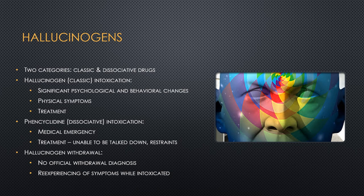Hallucinogens cause a very profound disturbance in reality. There are two categories: classic and dissociative drugs. Classic hallucinogens such as LSD — also called acid or boomers — can cause significant psychological and behavioral changes including paranoia, illusions, and hallucinations. Physical symptoms include pupillary dilation, tachycardia, sweating, and tremors. Treatment is usually trying to talk the patient down and reassure them the symptoms will subside. In severe cases, Haldol or Valium may be administered short-term.